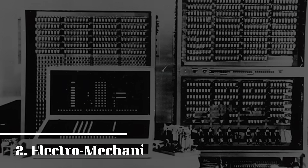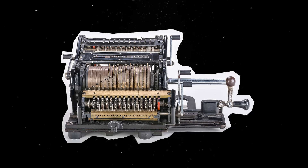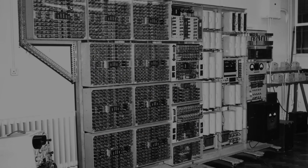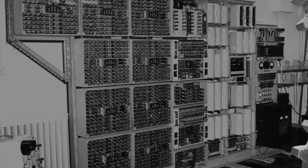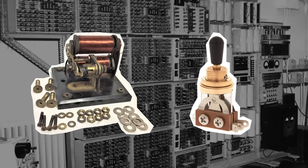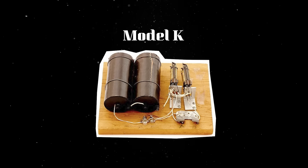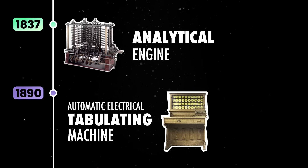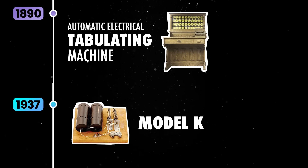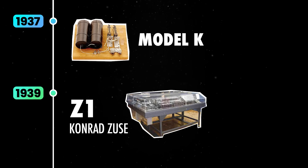A couple more decades had to pass for another breakthrough to occur in the industry. While mechanical components like gears and punch cards had been the backbone of early computing, the 1930s and 1940s saw a shift toward electromechanical and fully electrical computers. Instead of relying solely on moving parts, these machines used electrical relays and switches to process data more efficiently. The first electromechanical binary calculator, modestly named the Model K after the kitchen table where it was assembled, was built by George Stibitz at Bell Labs in 1937. However, a huge milestone was achieved just a year later, when Conrad Seuss developed the Z1.